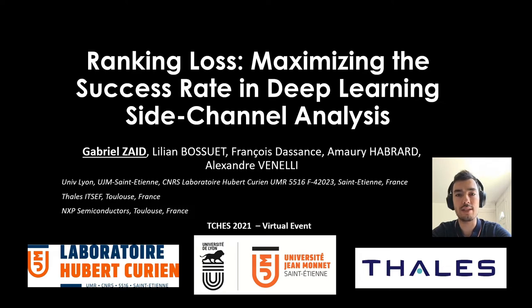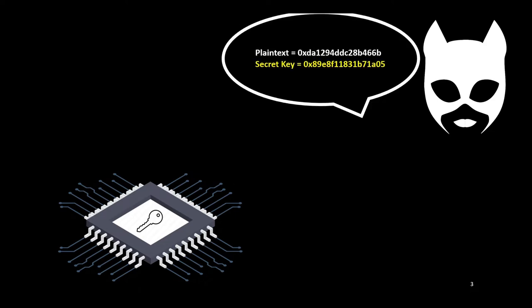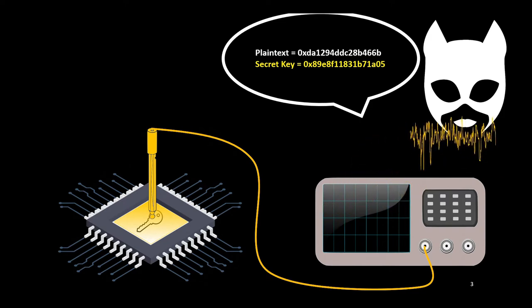But first, what's the point with side-channel attacks? To understand this concept, let's take a look at an example. Let's assume that an adversary has access to a physical device in which a cryptographic algorithm, like AES, is implemented, such that she can configure the secret key and the plaintext to perform an encryption. The goal of the adversary is to recover the sensitive information manipulated during this operation. To perform a side-channel attack, she needs one probe — here an EM probe — and one oscilloscope at least, such that during the encryption she can capture a physical trace that directly depends on the sensitive information manipulated by the cryptographic module.